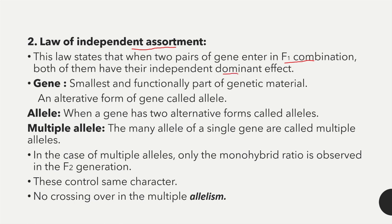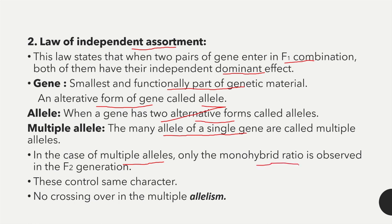The next term is gene — the smallest or functional part of genetic material. An alternative form of a gene is called an allele. Multiple alleles refer to the many alleles of a single gene. In the case of multiple alleles, only the monohybrid ratio is observed in the F2 generation, and crossing over does not occur in multiple allelism.